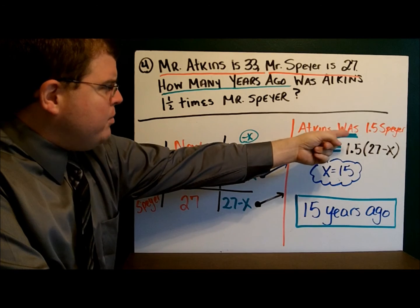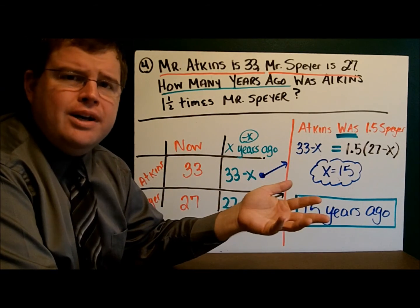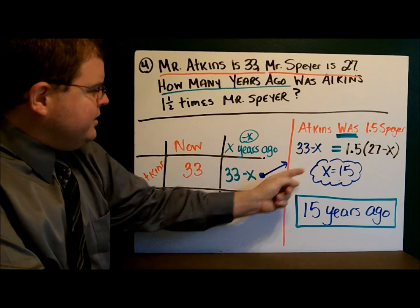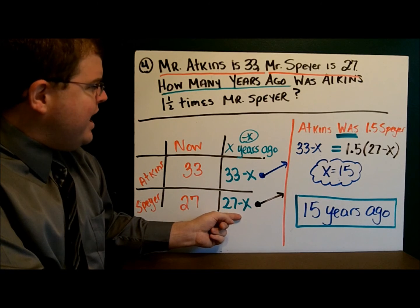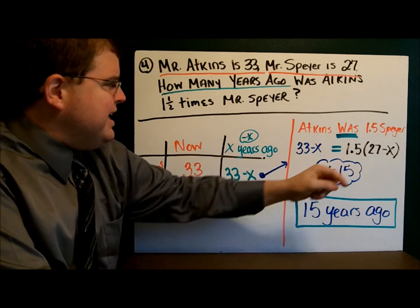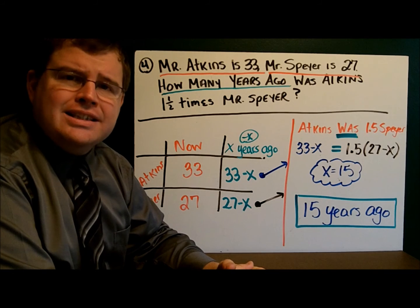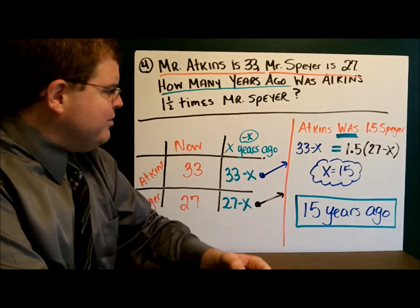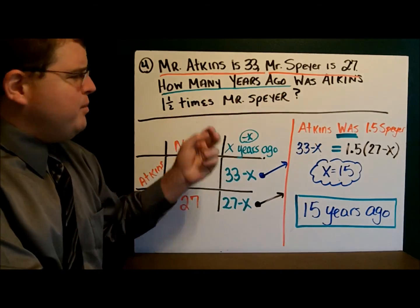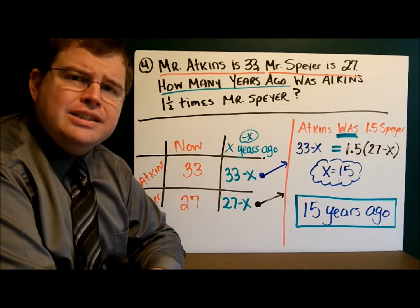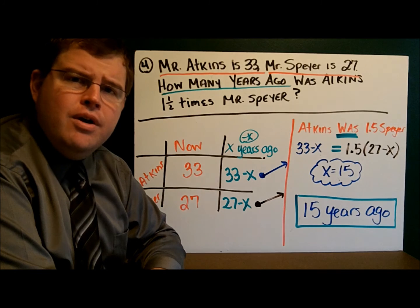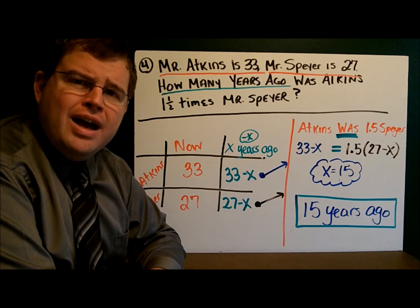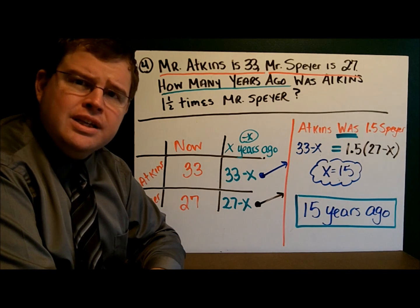So thirty-three minus X equals one and a half — or 1.5, you could write it as a fraction or decimal — times twenty-seven minus X. When we solve, we get X equals fifteen. X represented the number of years ago, so it was fifteen years ago when this was true. Given the ages now and some information about the future or the past, you can easily write an equation to solve that problem. This is how you solve puzzles that involve ages.